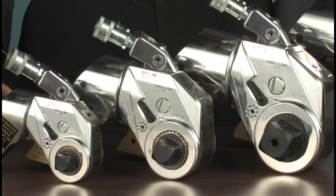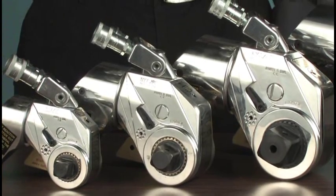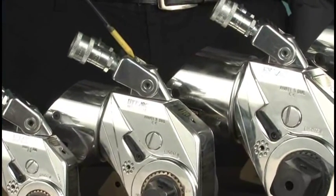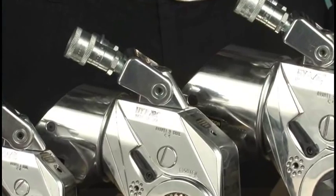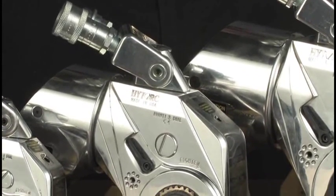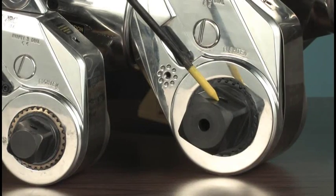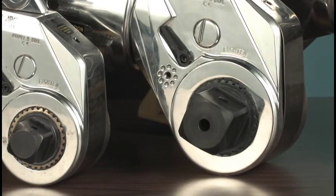For example, a high torque Avanti III has a maximum torque output of approximately 3,000 foot-pounds at the maximum pump pressure of 10,000 psi, while an Avanti V will produce about 5,000 foot-pounds at that same 10,000 psi pressure.